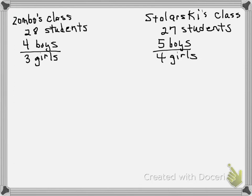In Mr. Stolarski's class it is 5 to 4. There are 28 students in Ms. Zombo's class and 27 in Mr. Stolarski's class. What is the ratio of boys to girls in the combined classes?